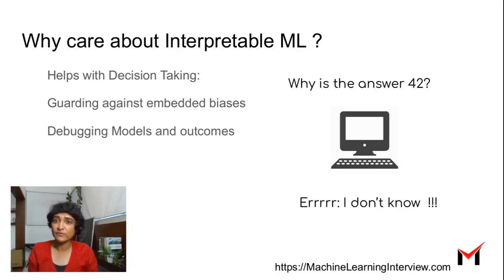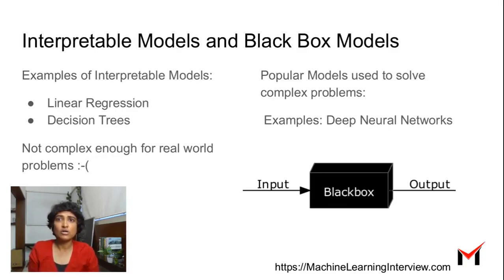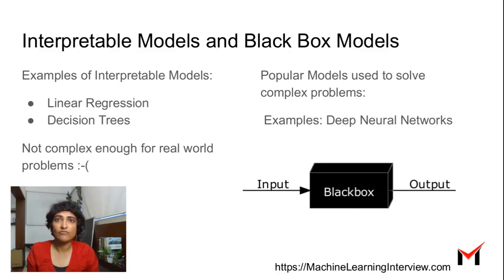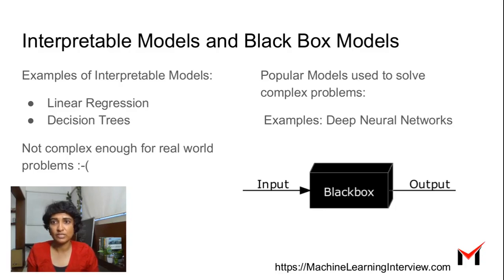It also helps with debugging models and outcomes. Some models are interpretable by nature — for instance, linear regression, decision trees, and so on are interpretable models. If you fit linear regression, you can just look at the weights of individual features to see which features are more important. Similarly, there are ways to see which features are important from decision trees.